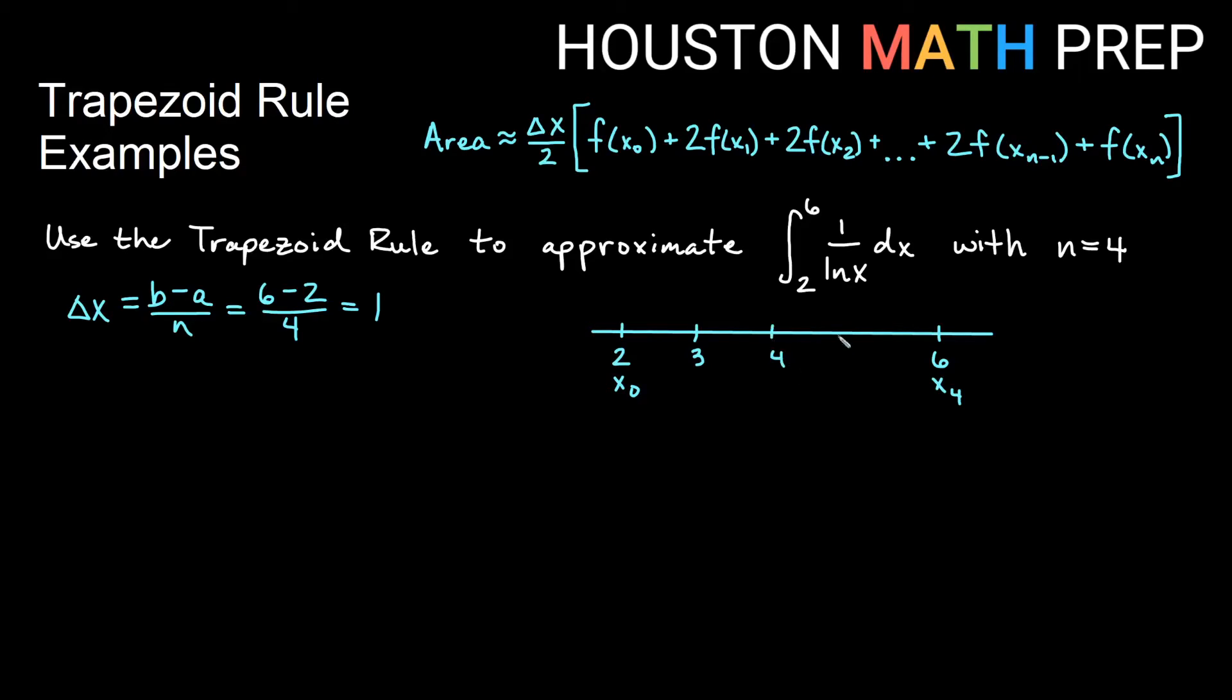2, then 3, then 4, then 5, then 6. So 3 will be my x₁, 4 will be my x₂, 5 will be x₃.